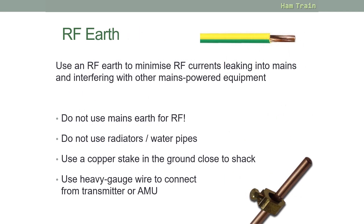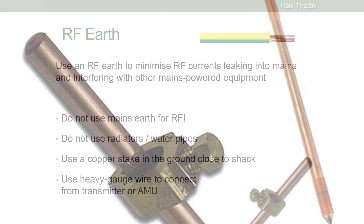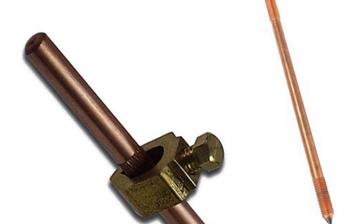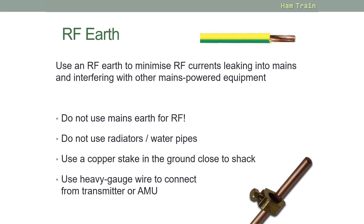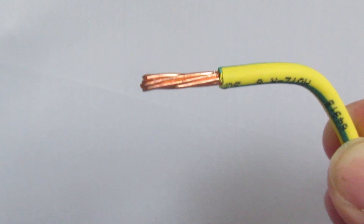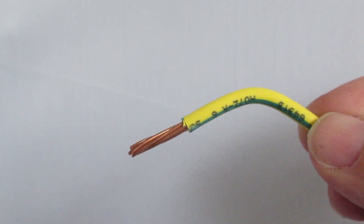A few words about RF earth. You can use an RF earth to minimize the RF currents leaking into the mains, and therefore interfering with other mains equipment. You should never use the mains earth as a radio earth. Also, don't use radiators or water pipes – some may be metal, but some are plastic. Ideally, you should be looking at putting a copper stake into the ground as close to the shack as possible. You should use heavy gauge wire to connect from the transmitter or the AMU to form your RF earth.